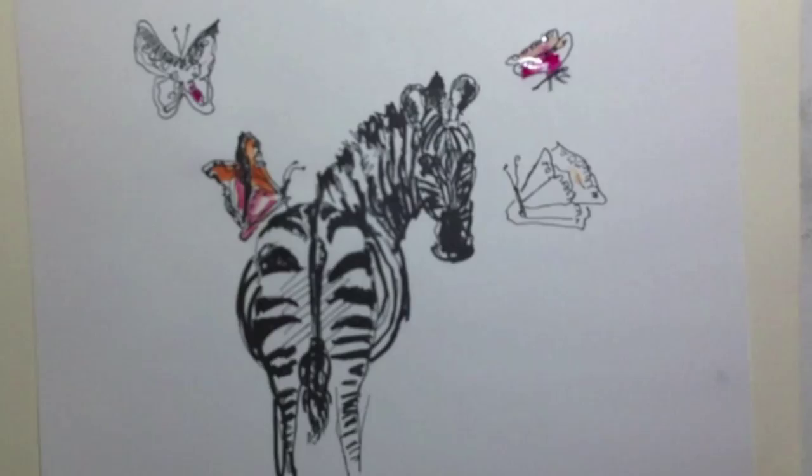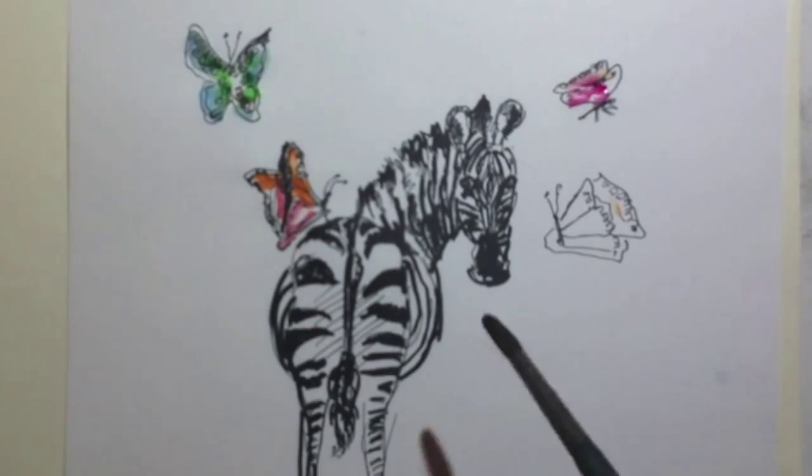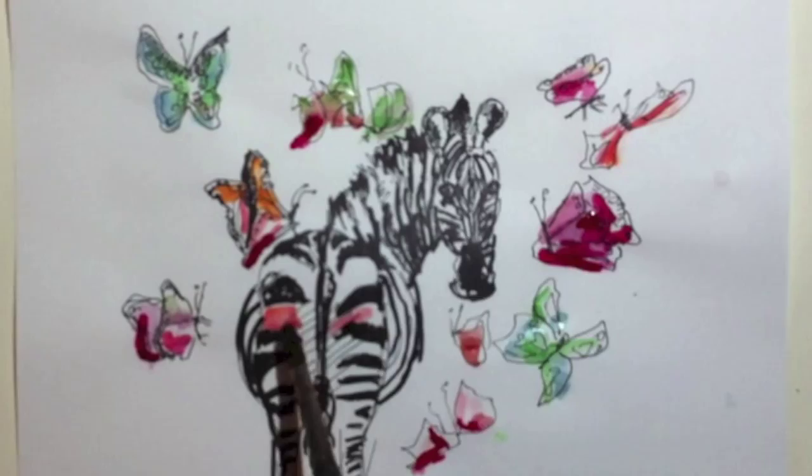The zebra discovered that although he may appear to be black and white, mental health is a spectrum of color and diversity.